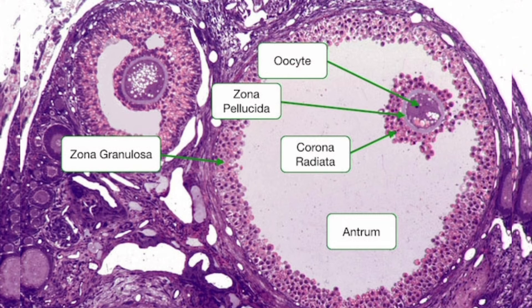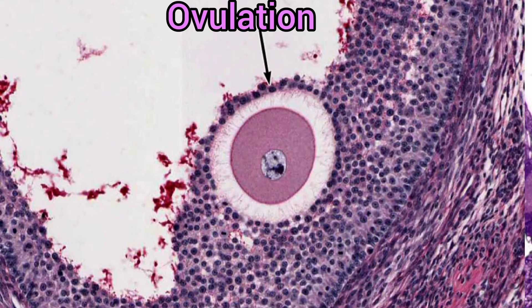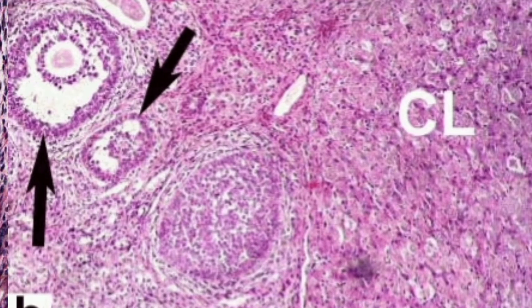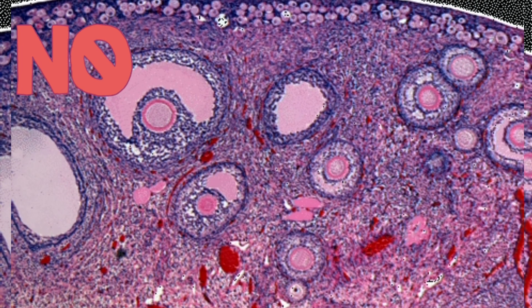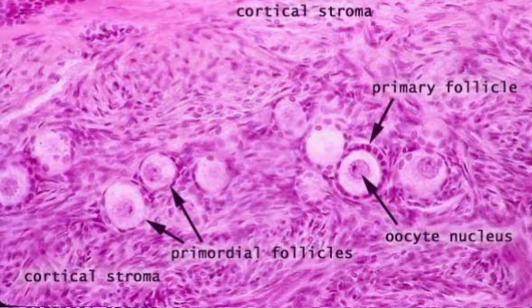The mature follicle ruptures and releases the ovum — this is called ovulation. The ruptured follicle forms the corpus luteum, which is an endocrine tissue that releases progesterone, the pregnancy hormone. All the stages of oogenesis cannot be seen at the same time; however, they can be seen when an ovary is observed over the entire duration of the menstrual cycle.